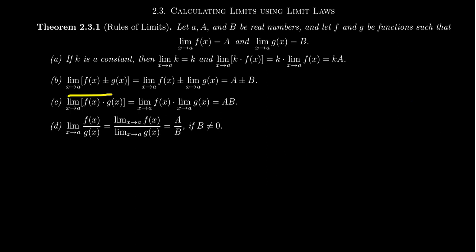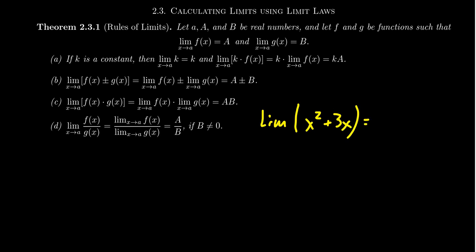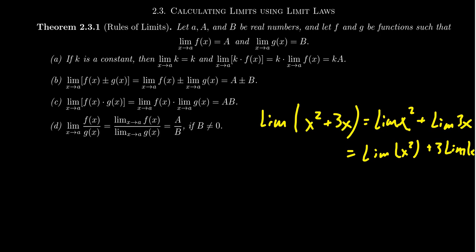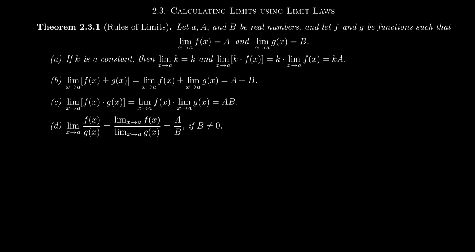Limit law B: if we take the limit of f(x) plus or minus g(x), this will equal the limit of f plus or minus the limit of g, which turns out to be A plus or minus B. The idea is that if you take the limit of the sum of two functions, it's the sum of limits; the limit of a difference is the difference of the limits. For example, the limit of x² + 3x can be broken up into the limit of x² plus the limit of 3x. By limit law A, you can pull out the coefficient 3 and get 3 times the limit of x. These properties are starting to show how we want to algebraically approach these things.